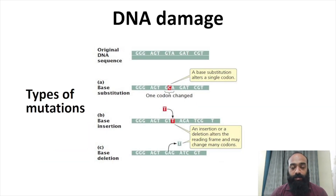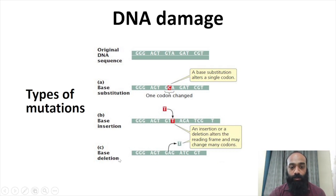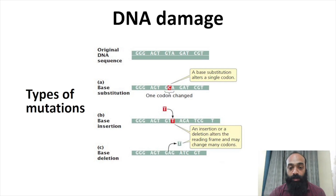Under DNA microlesions, certain chemicals can induce changes in nucleotides. There are three types: base substitution, base insertion, and base deletion. In base substitution, a base such as thymine is substituted for cytosine, changing the meaning of the codon. This means the codon that was specifying one amino acid now specifies a different amino acid, resulting in an altered protein that may not function properly or may be degraded.